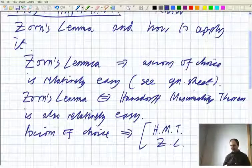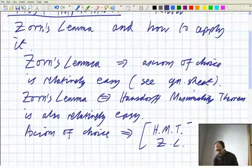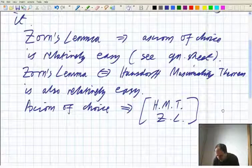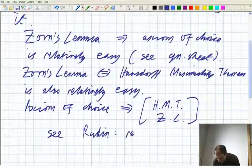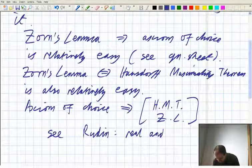So the actual choice to imply Hausdorff-Maximality theorem or Zorn's lemma, which of course is equivalent, see Rudin, real and complex analysis. There's an appendix in there.